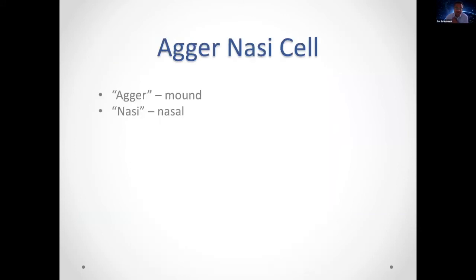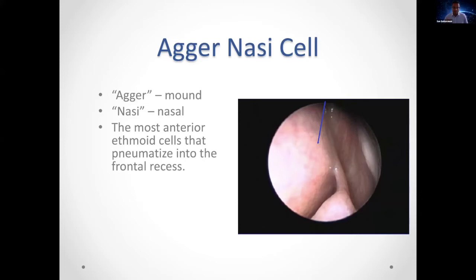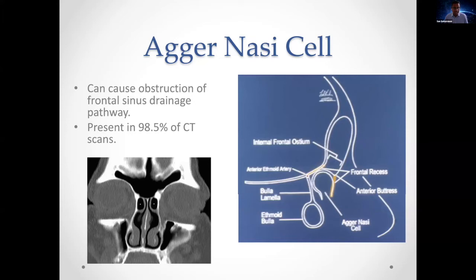The agger nasi — from the Latin for 'nasal mound' — is the most anterior ethmoid cell, forming a mound in the region of the anterior buttress. It is the anterior boundary of the frontal sinus drainage pathway and the frontal recess. It is present in the majority of sinuses. On a coronal CT scan, it almost always appears anterior to the middle turbinate, making it easily identifiable.